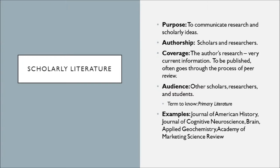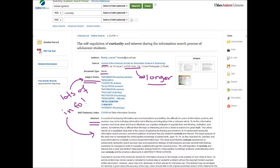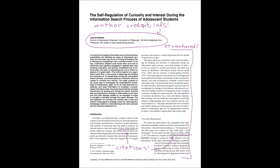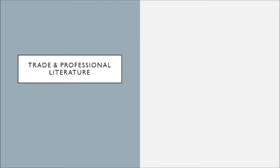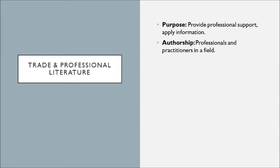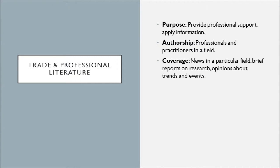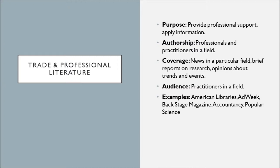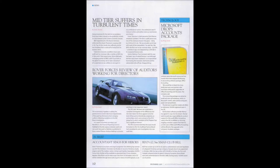Examples of scholarly literature can be found in journals like Journal of American History, Journal of Cognitive Neuroscience, and Brain, among others. Here is an example of a scholarly article. For trade and professional literature, the purpose is to provide professional support and to apply information. Authorship is often professionals and practitioners in the field, reporting about their experiences. Coverage is news in a particular field, brief reports on research, or opinions about trends and events. The audience is practitioners in the field — this is for professional development purposes. Examples include American Libraries, Adweek, Backstage Magazine, Accountancy, and Popular Science. Here's an example of an article in a professional magazine or journal.